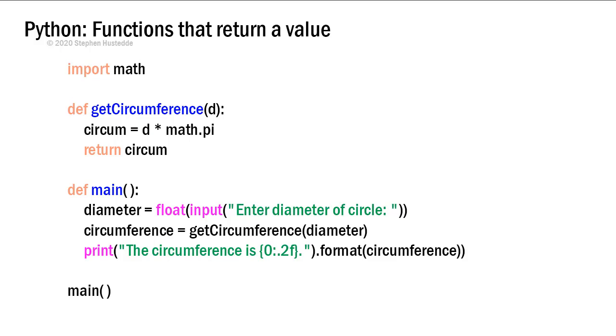I have the math module imported, and then I have two functions, getCircumference and main. And then my executable code is just the calling of main at the very bottom. So the main function runs, and the first thing we do is we ask the user to enter the diameter of a circle that's converted from string to a float value and assigned to the variable diameter.